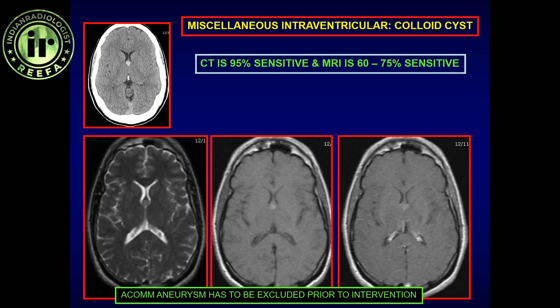Most of the time, colloid cysts are incidentally detected without headache. Depending on size, they may be associated with mild, moderate, or severe hydrocephalus, though incidentally found cysts are often not associated with any hydrocephalus. On MRI, the signal is very variable; enhancement is not a specific attribute. It is not associated with restricted diffusion and not associated with pulsation artifact, which helps differentiate it from an anterior communicating artery aneurysm.